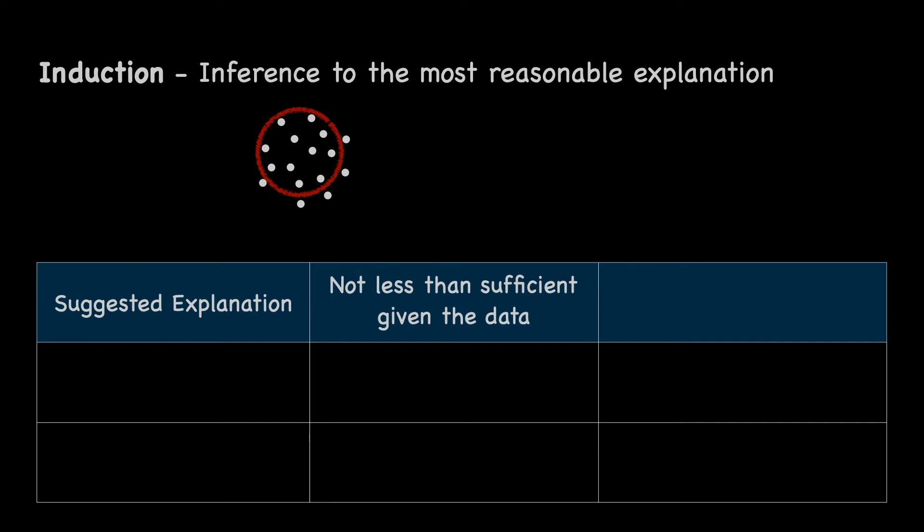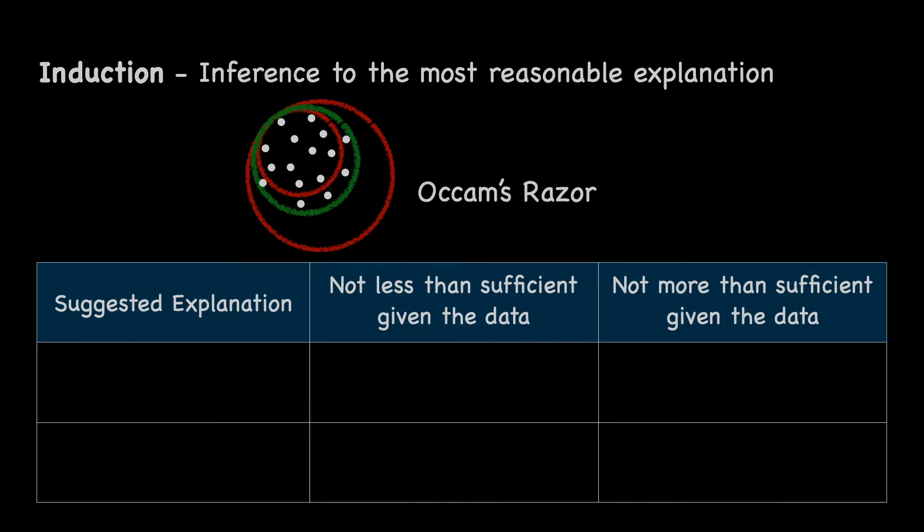On the other hand, the explanation may not be more than what is sufficient, otherwise some of its parts are not supported by the data. The explanation must be just sufficient. This criteria is sometimes referred to as Occam's razor: choose the simplest explanation that accounts for all the data, which is a specific case of the more general principle, sufficient reason.